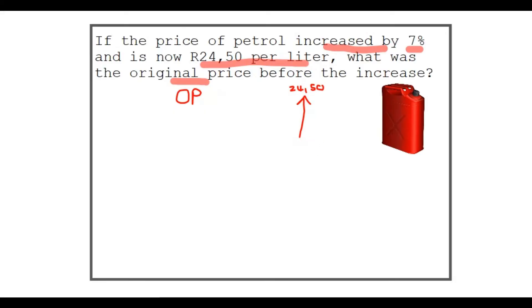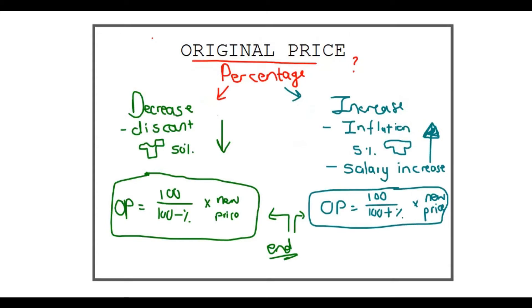This amount increased and is now 24.50. What was the original price? This sounds like it's inflation. Look at your formulas, decide which one you're going to use. We're going to use percentage increase. I'm going to write down my OP. How do I find that? I say 100 over 100 plus that percentage and I multiply it by the new price. So in this case I'm saying 100 over 100 plus 7, just 7, and I multiply it by 24,50.